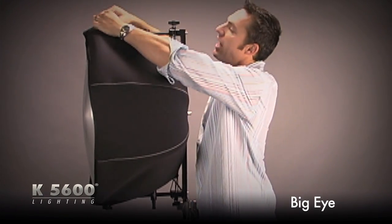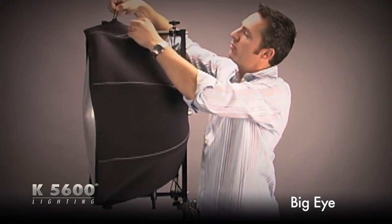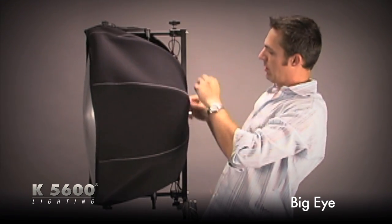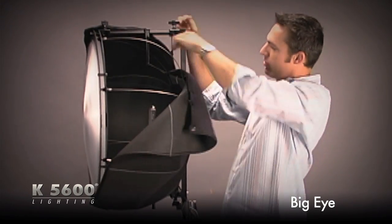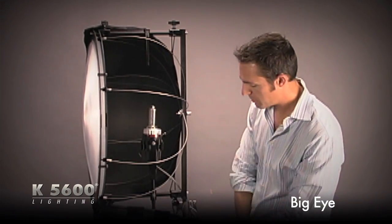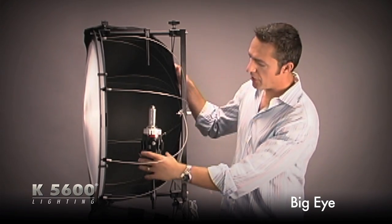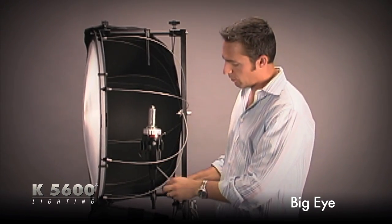Now let's take a look inside here. Simply by removing a couple bungees, our nice black scuba suit skirt comes off and now you can see what we've got inside. This is a 400 watt Joker Bug.